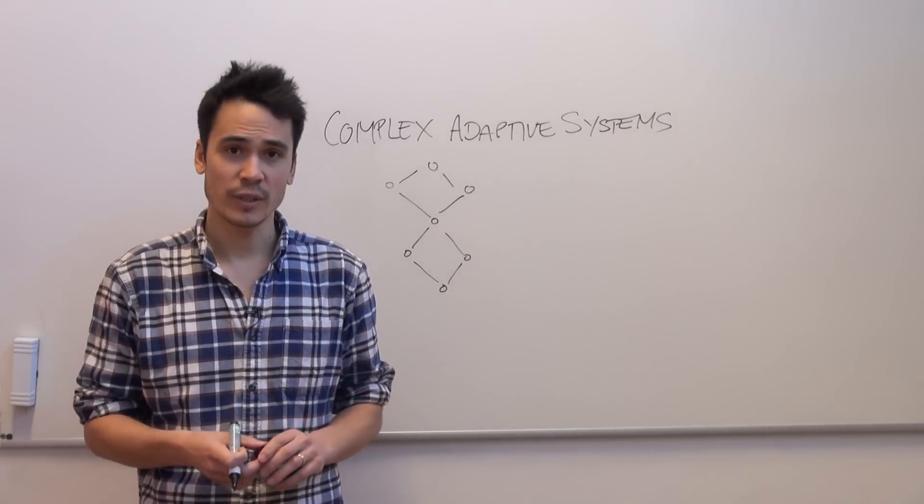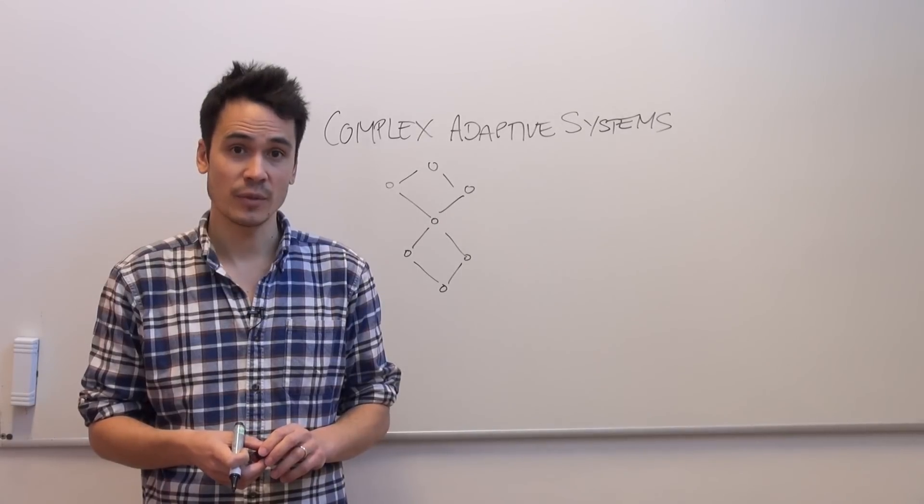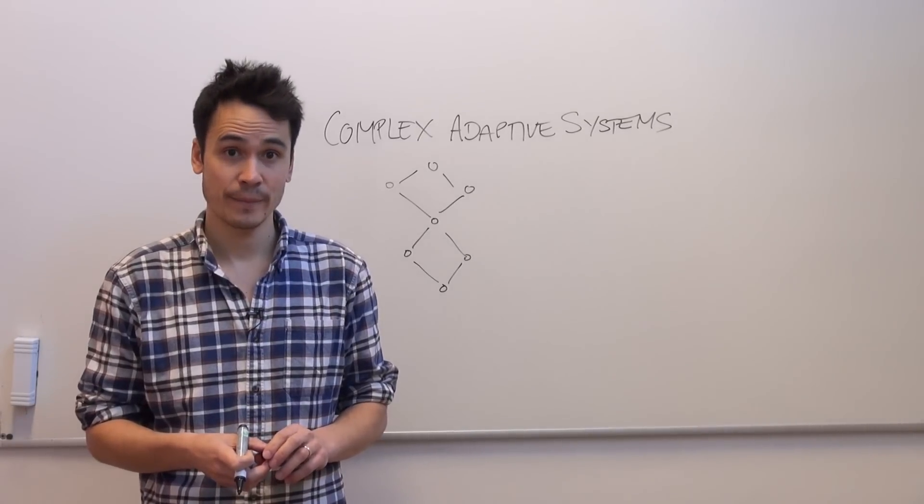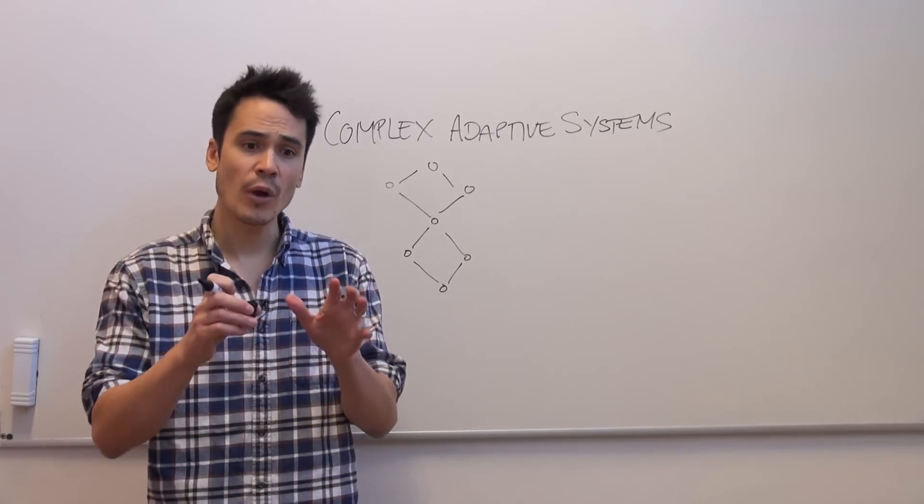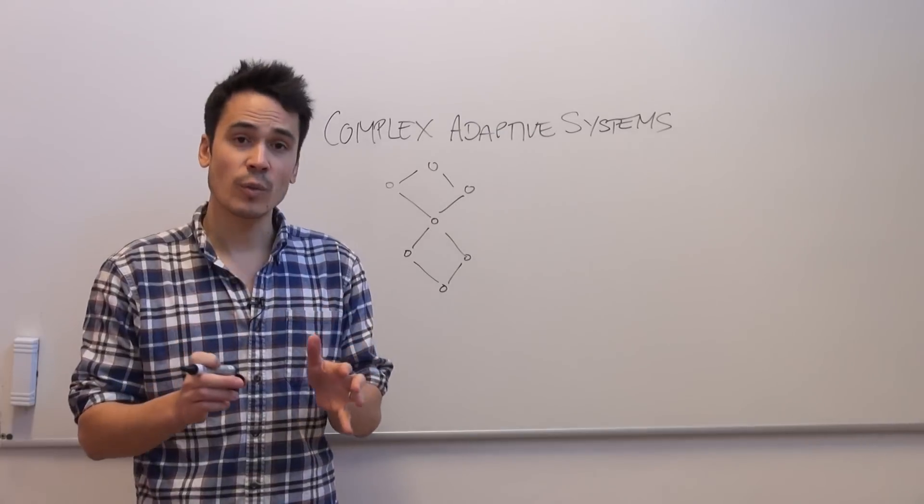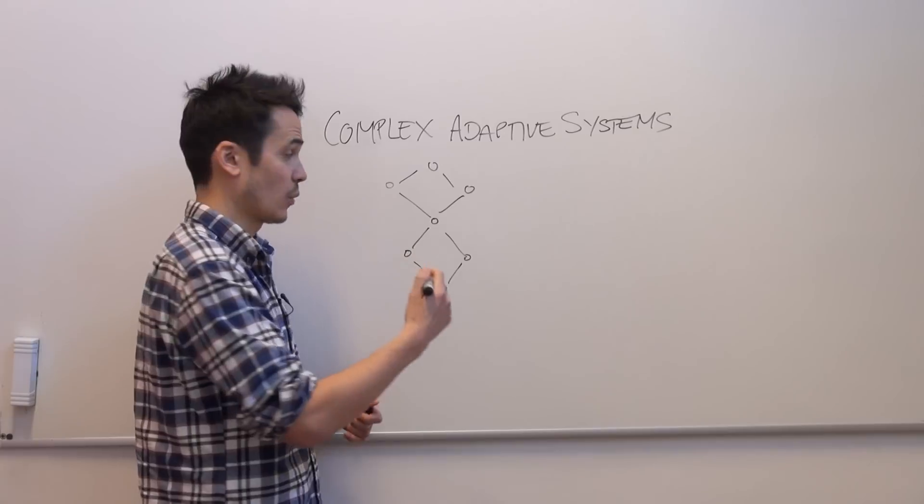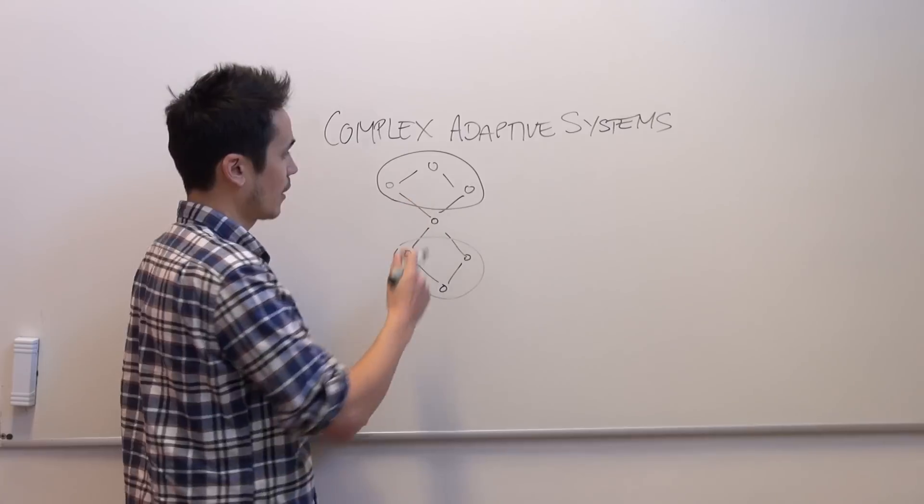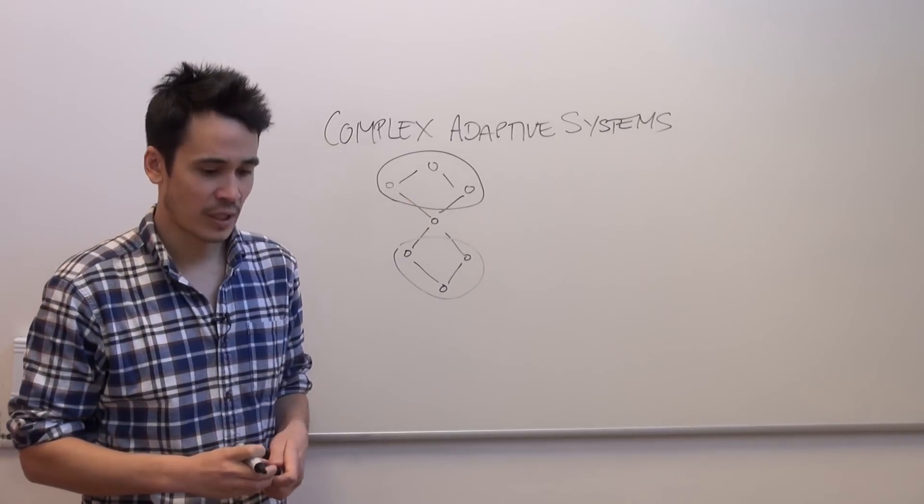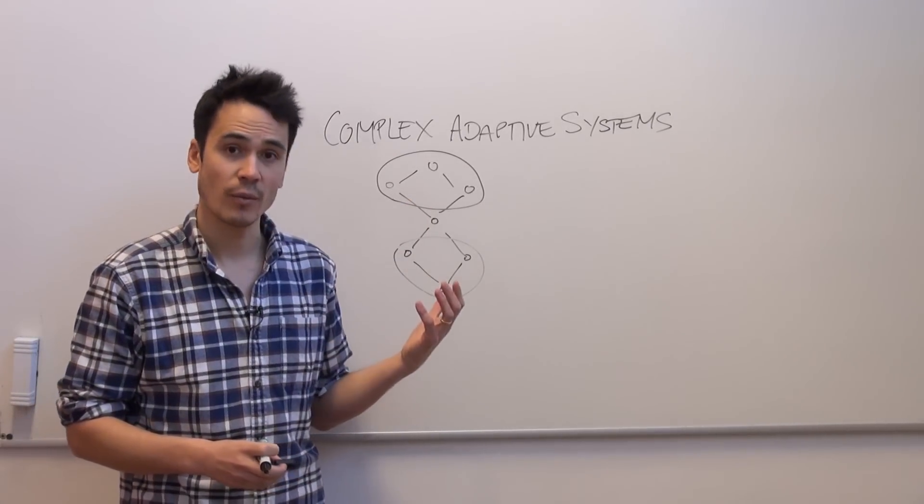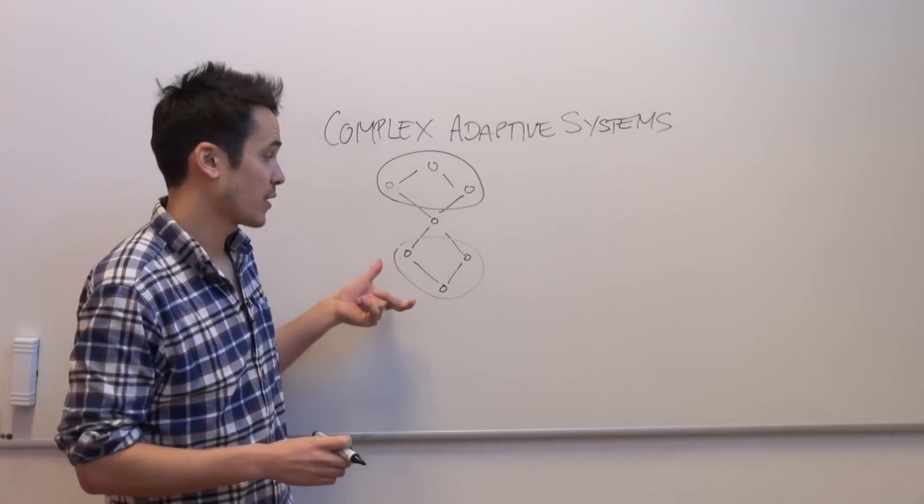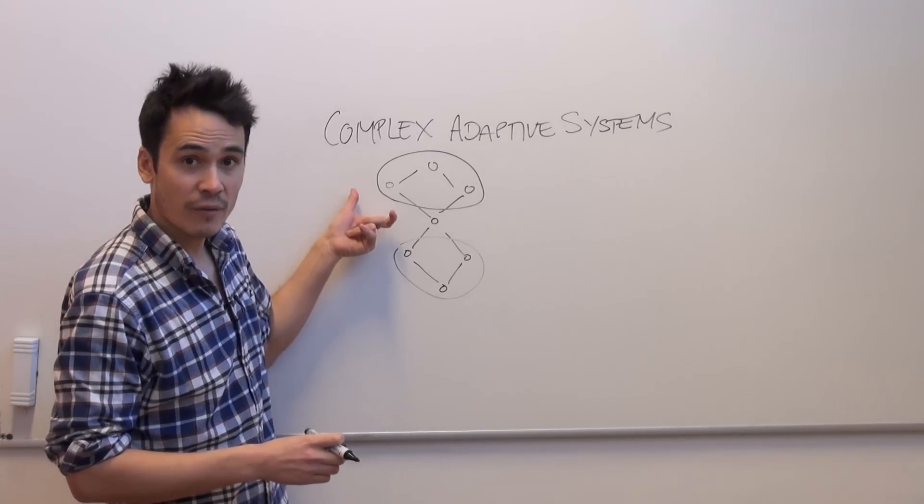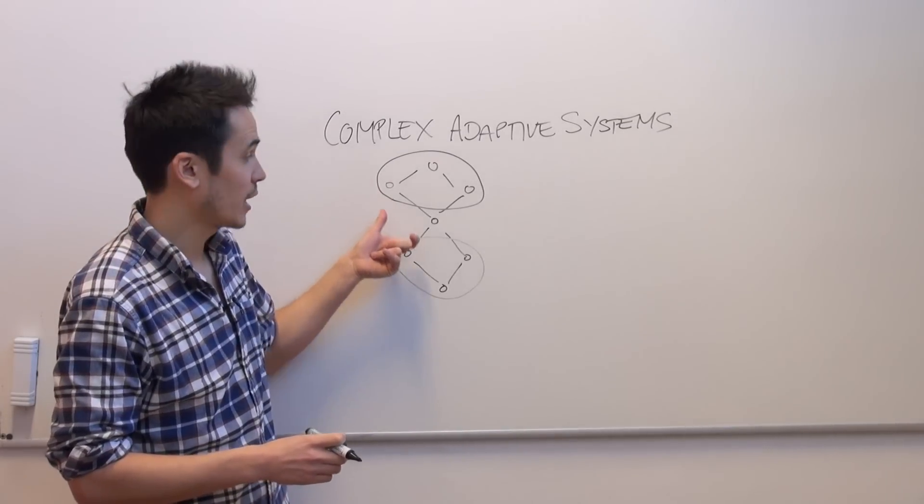The last property of a complex adaptive system is called modularity. This means that although the system overall is well connected, parts of the system are more connected within than between the system. So as an example, this could be my social network, where I have my friends at work and my friends that I play football with, and I connect the two.